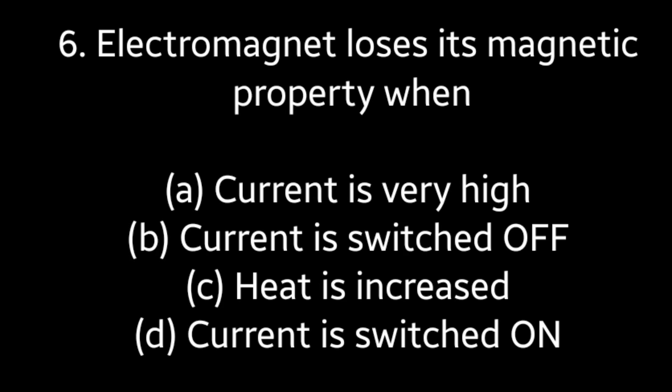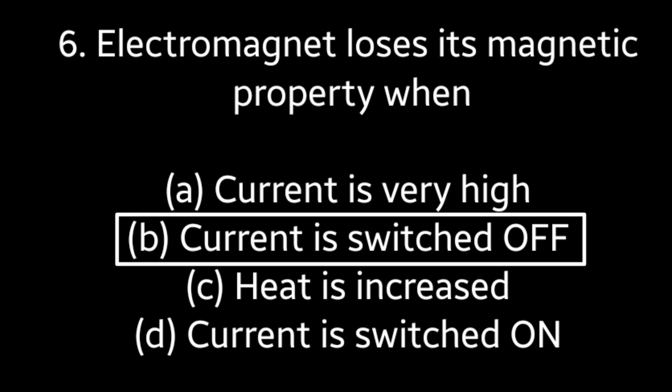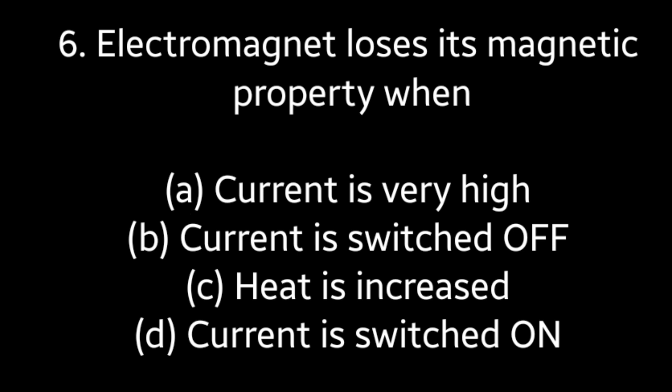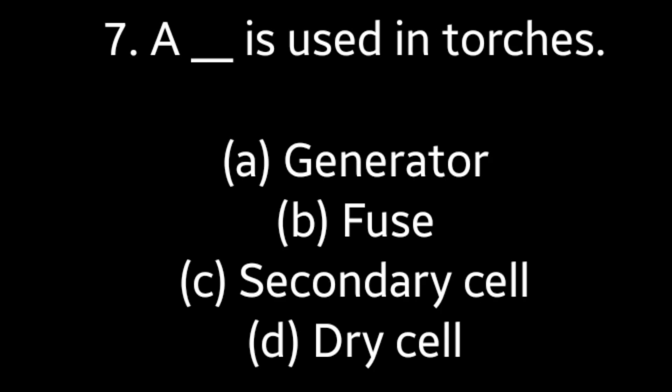Question No. 6: An electromagnet loses its magnetic property when — Current is very high, Current is switched off, Heat is increased, Current is switched on. Answer is Option B: Current is switched off.